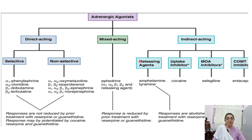Mixed acting drugs — ephedrine — acts on alpha-1, alpha-2, beta-1, and beta-2 receptors. Its effects are reduced by prior treatment with reserpine and guanethidine.